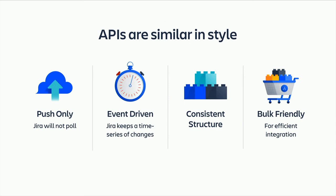The APIs are consistent in structure — we're trying very hard to have them all feel familiar. A good example is how we model an environment: deployments are done into environments, and feature flags are done in environments, so we model it the same way in both APIs. Finally, the APIs are bulk-friendly. There's a lot of data flying backwards and forwards, so we support sending data in bulk.